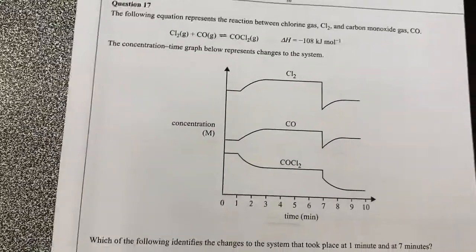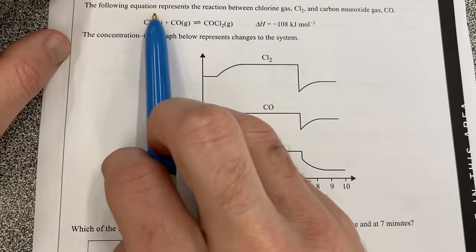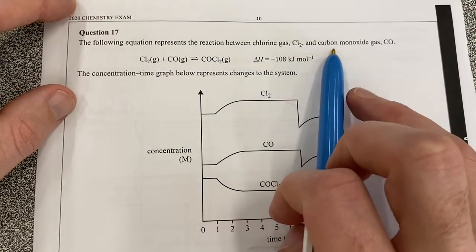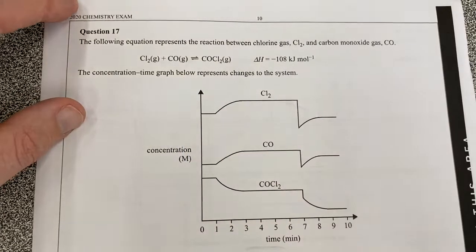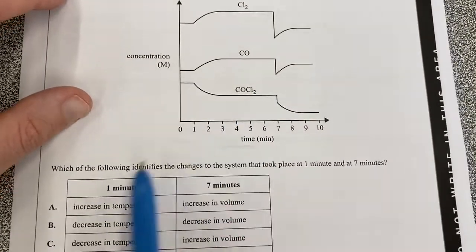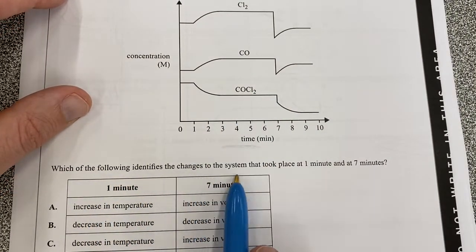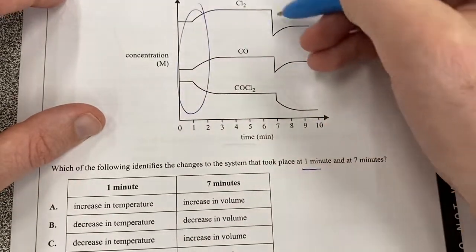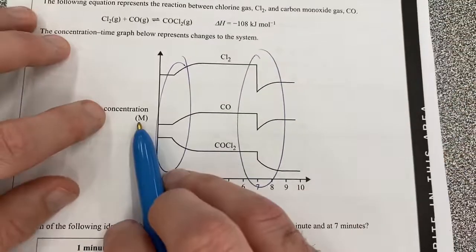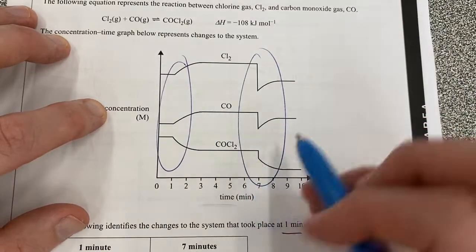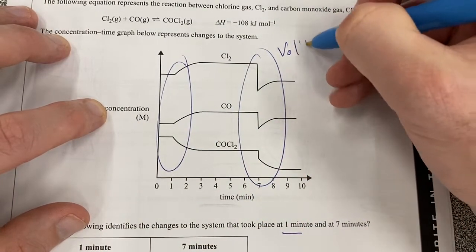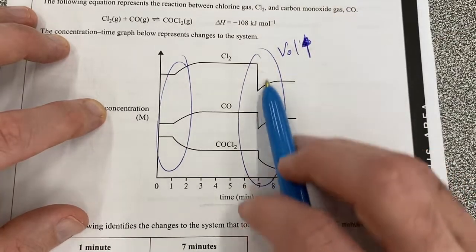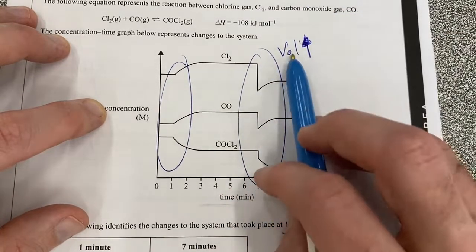Question 17, the following equation represents the reaction between chlorine gas and carbon monoxide gas, so we've got this beautiful one here. This is an equilibrium question. Which of the following identifies the changes to the system that took place at one minute and seven minutes? What happened here and what happened here? Our concentration of these all went down, so our volume was increased here, which is fantastic. We have an initial decrease in all concentrations, so volume must have been increased.